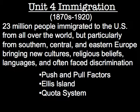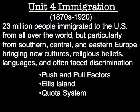In Unit 4 we studied the incredible wave of immigration that hit the United States in the 1870s and lasted into the early 1920s. We saw how new immigrants from southern, central, and eastern Europe brought very different cultural traditions, religious beliefs, and languages compared to earlier immigrants from places like Great Britain, France, and Germany. We studied push and pull factors, took an in-depth look at Ellis Island in New York Harbor, and saw how fear of immigrants in the early 1920s led to a limit on immigration known as the quota system.